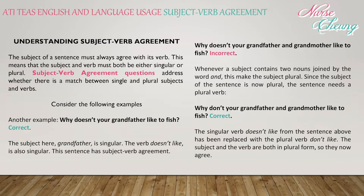'Why doesn't your grandfather and grandmother like to fish?' — this is incorrect. Whenever a subject contains two nouns joined by the word 'and,' this makes the subject plural. Since the subject is now plural, the sentence needs the plural verb: 'Why don't your grandfather and grandmother like to fish?' The singular verb 'doesn't like' has been replaced with the plural verb 'don't like,' so the subject and verb are both plural and they now agree.